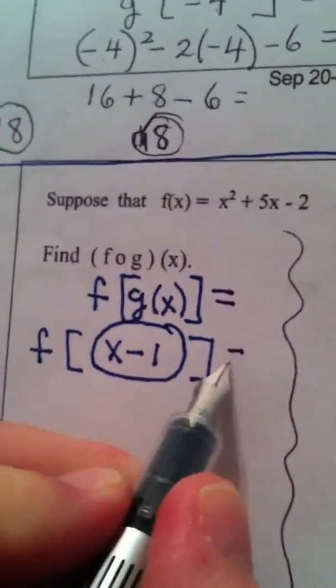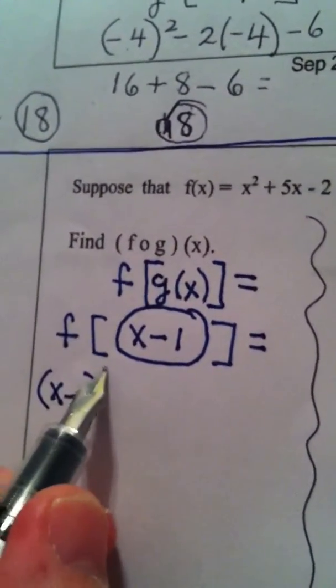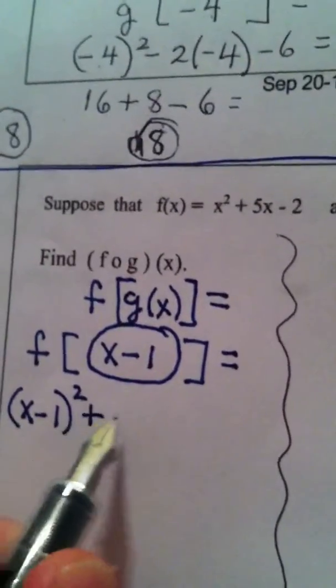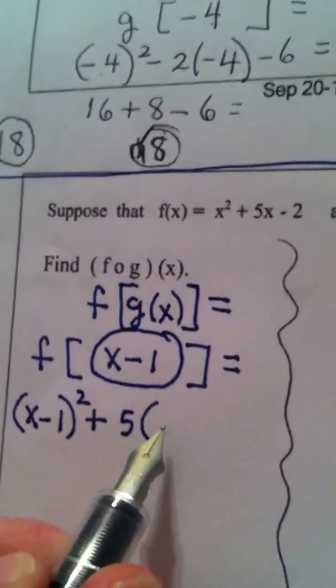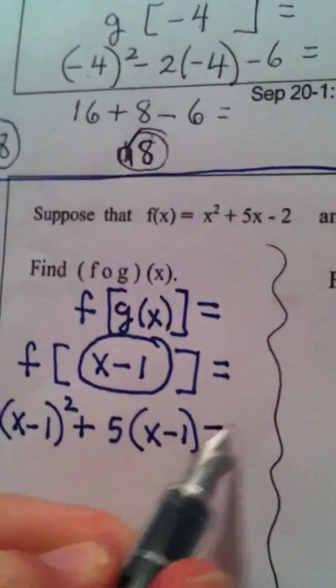So, we get x minus 1 quantity squared plus 5 times the input, which is x minus 1, and then we pick up the minus 2.